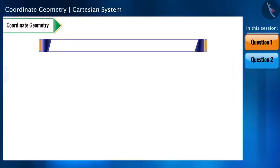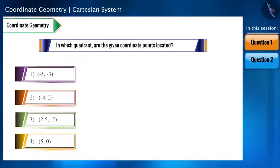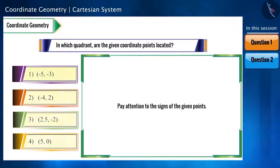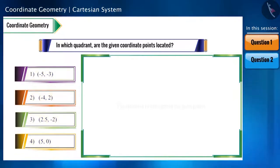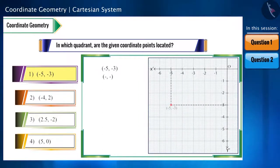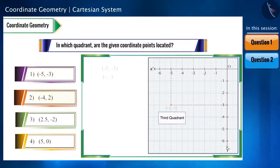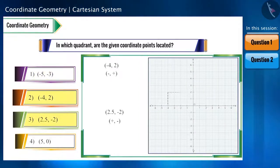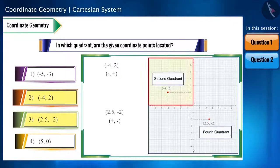Let's take the first question: in which quadrant are the given coordinate points located? In such questions, pay attention only to the signs — we don't have to state the exact position of the points, but only in which quadrant they are. The sign of the first option reflects the third quadrant — minus, minus — so that point is located in the third quadrant. Similarly, the second and third options will be in the second and fourth quadrants respectively.